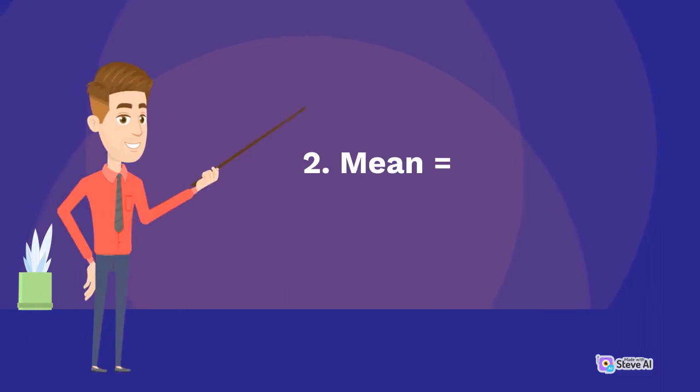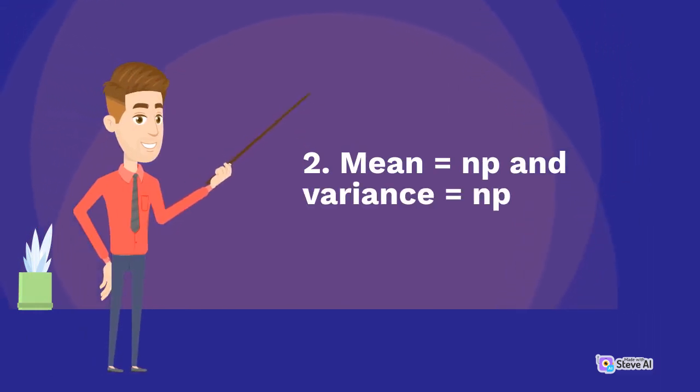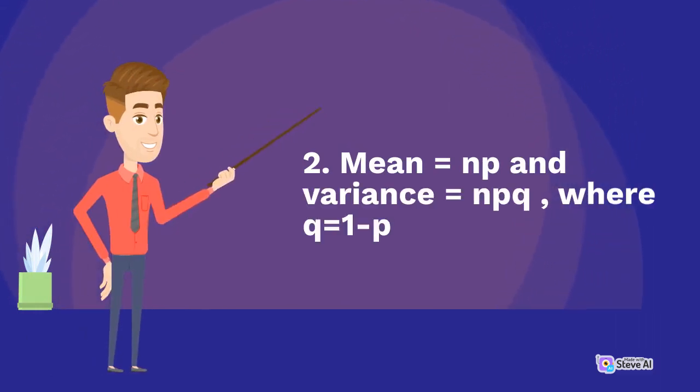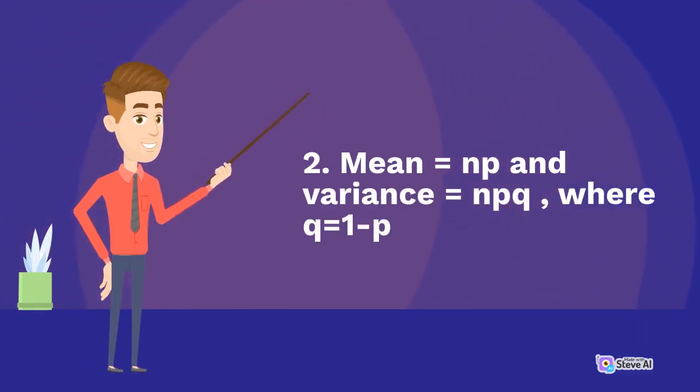2. The mean equals np and the variance equals npq, where q equals 1 minus p.